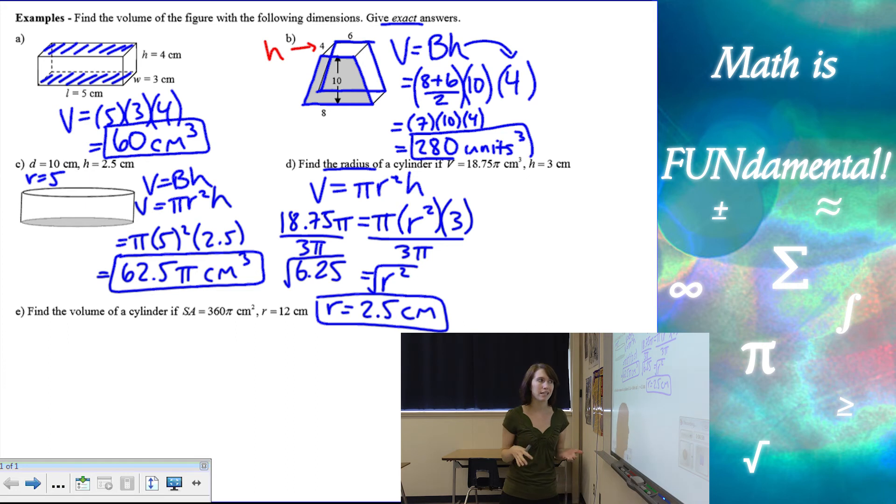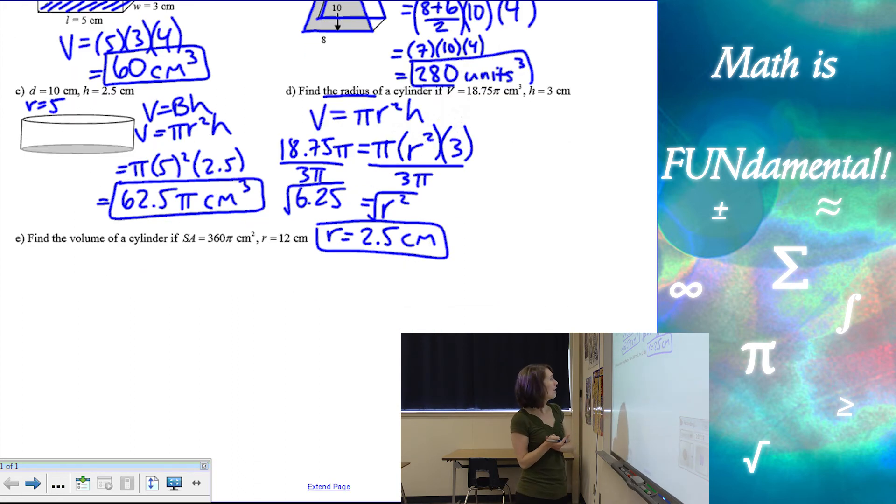And there we go. Now, technically negative 2.5 squared is also 6.25. But in reality, in the real world, we can't have a negative radius. So we just want to focus on the positives.